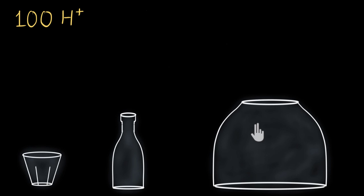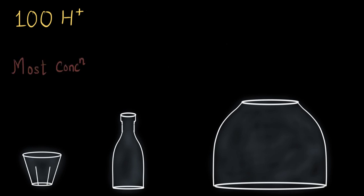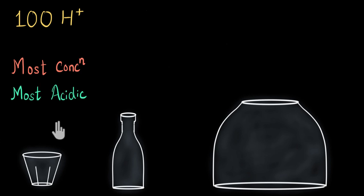Now you can probably guess that the acidic strength is going to be different in all three of them. You might have an intuition that the acidic strength in the glass is going to be the highest — most acidic — whereas the tank solution is going to be least acidic. Here, there are 100 H+ ions, but in a glass of water the volume is very small, so the H+ ions are most concentrated. If you take a spoonful of this solution, you will find many H+ ions in it, and that's what makes it the most acidic solution.